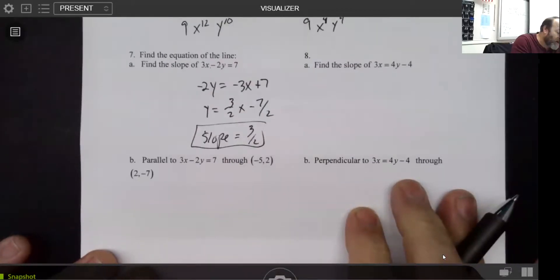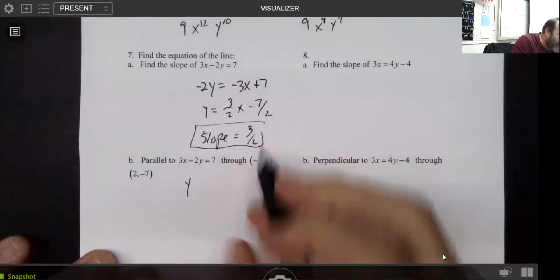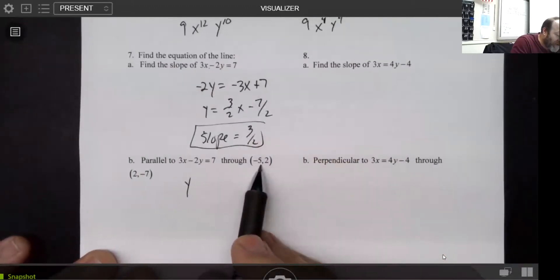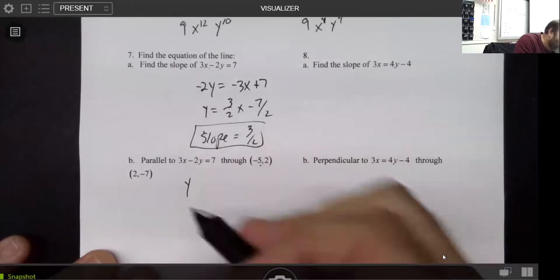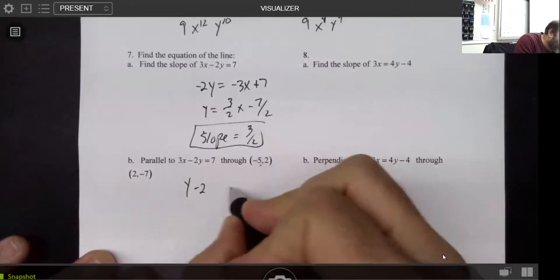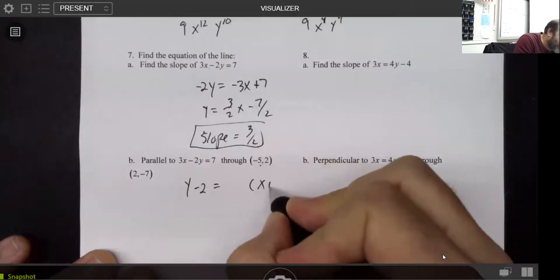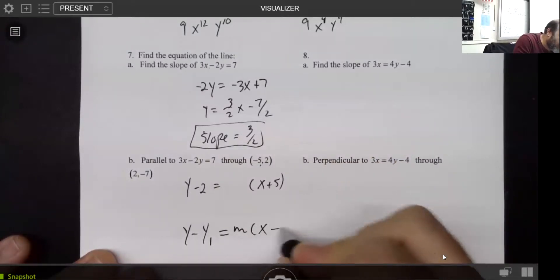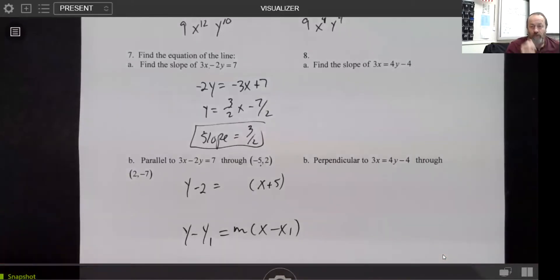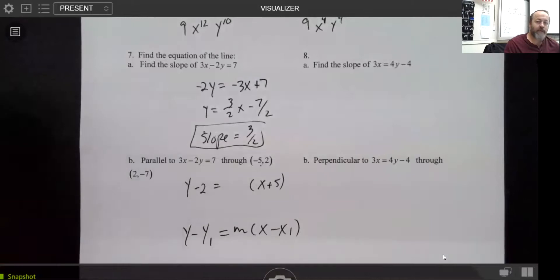That's very important, because down here, when we look at number 7b, they gave me a point, boom, and they gave me a slope, boom, right here, three halves. So what I'm going to do is I'm going to do y minus the y value and x minus the x value. And by the way, what I'm doing is I'm utilizing what we call the point slope form, which is the one we've been using through the first part of the year. I haven't seen it in a little bit in our class.